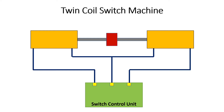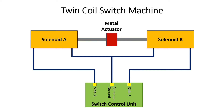So let me explain how they work. First we have our switch control unit — this could be an accessory decoder or just a slide or toggle switch. There are three wires coming in: side A, a common ground wire, and a side B wire. Inside the switch machine you have two solenoids, solenoid A and solenoid B, each wired to a different part of the control unit. Side A connects to solenoid A, side B to solenoid B, and the common ground runs from both solenoids to create two separate circuits. In the center between the two solenoids you have a metal actuator, which connects via linkage to the turnout points.